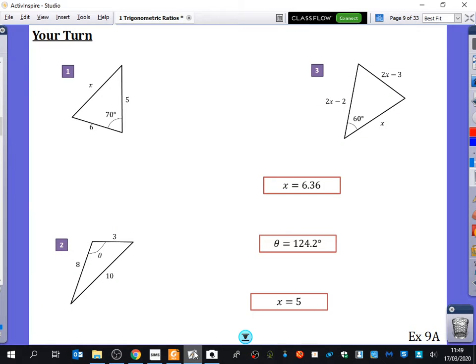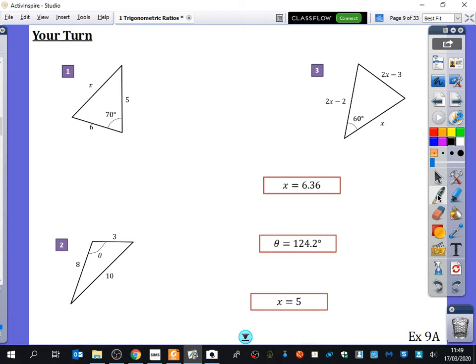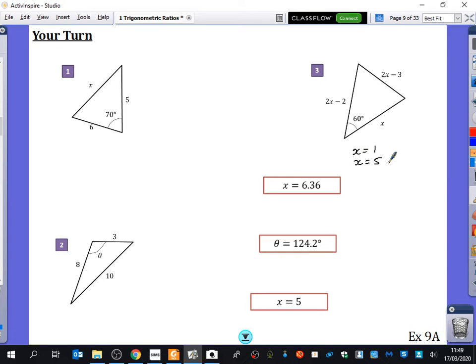The only thing I wanted to point out about these ones that you did is for this last one, you should have got that x is equal to 1 or that x is equal to 5, which both seem valid, but why are they not both valid?